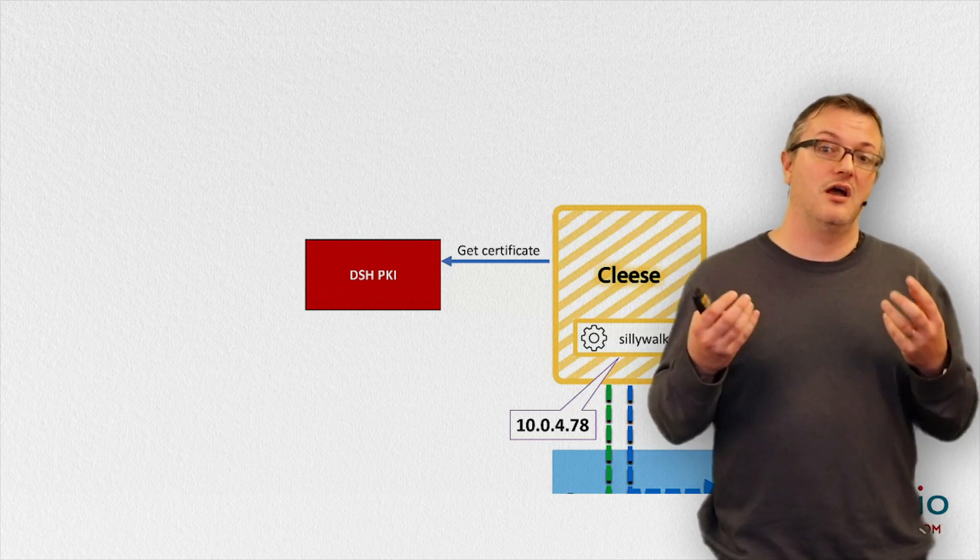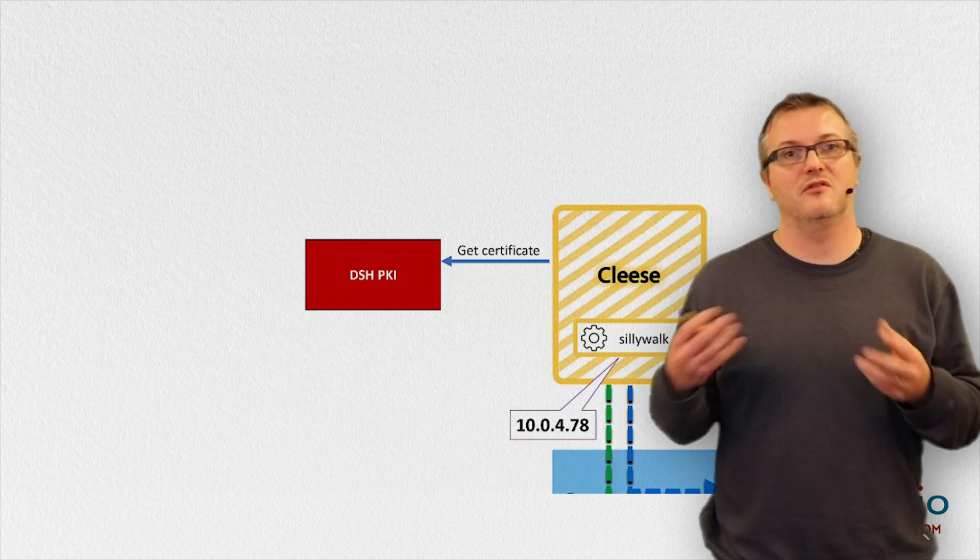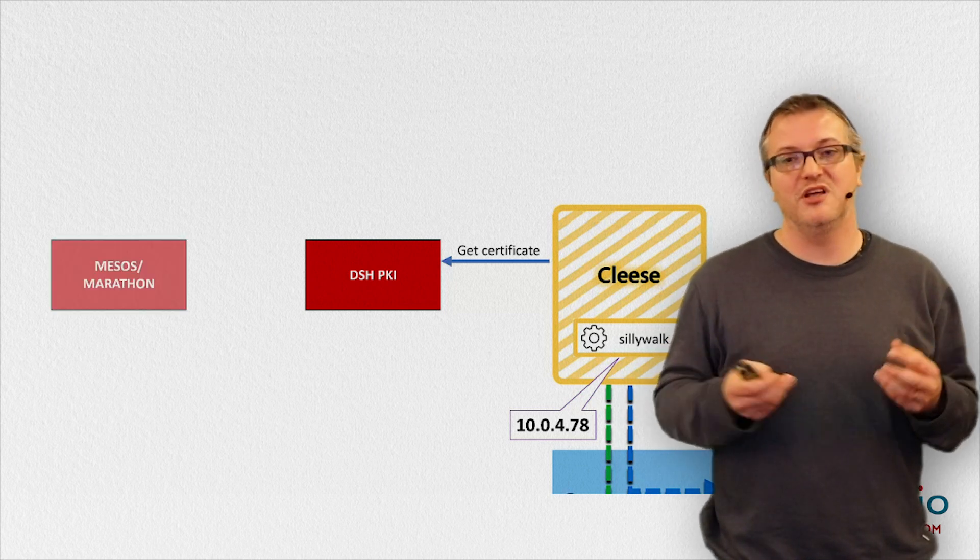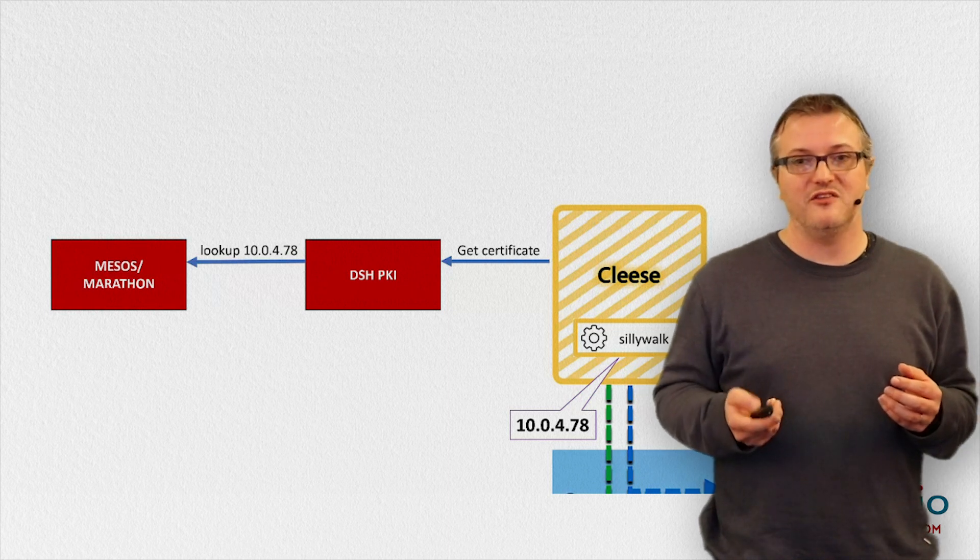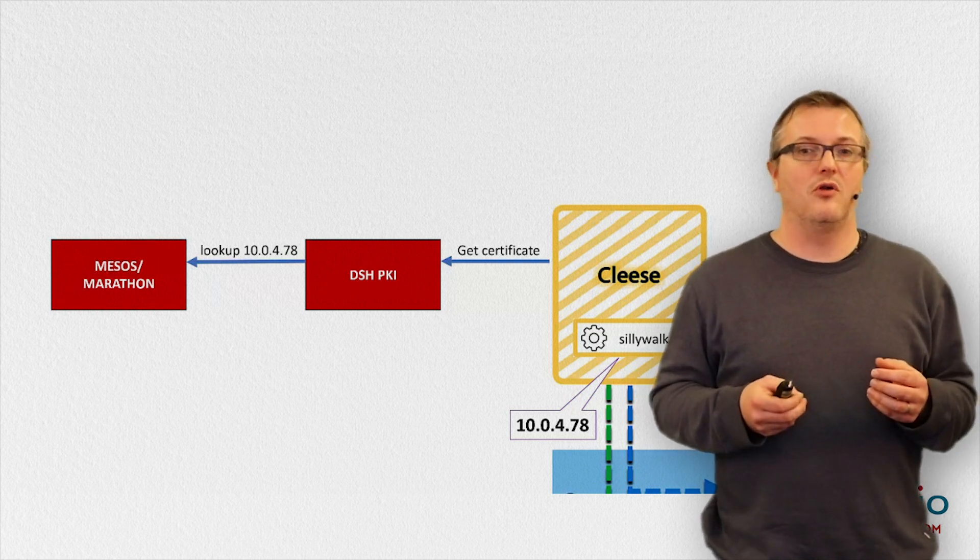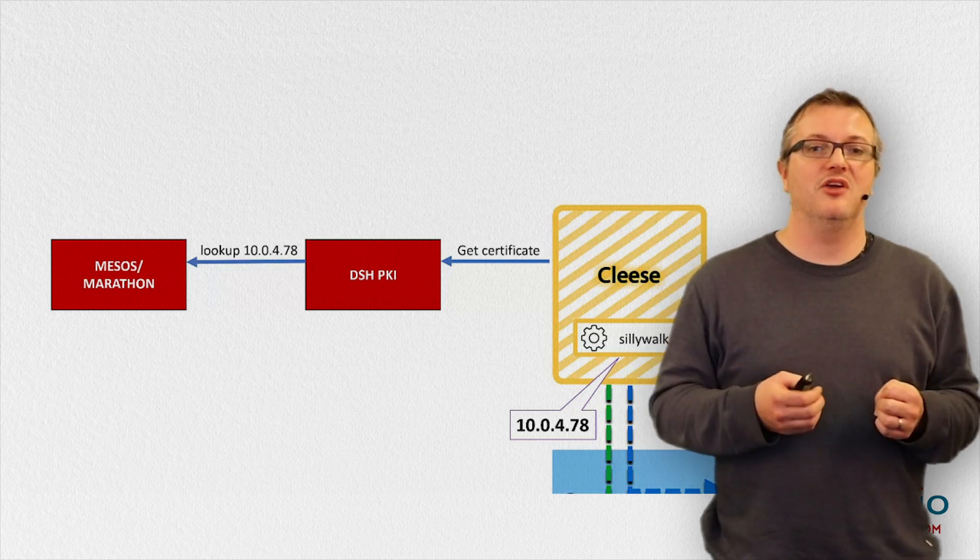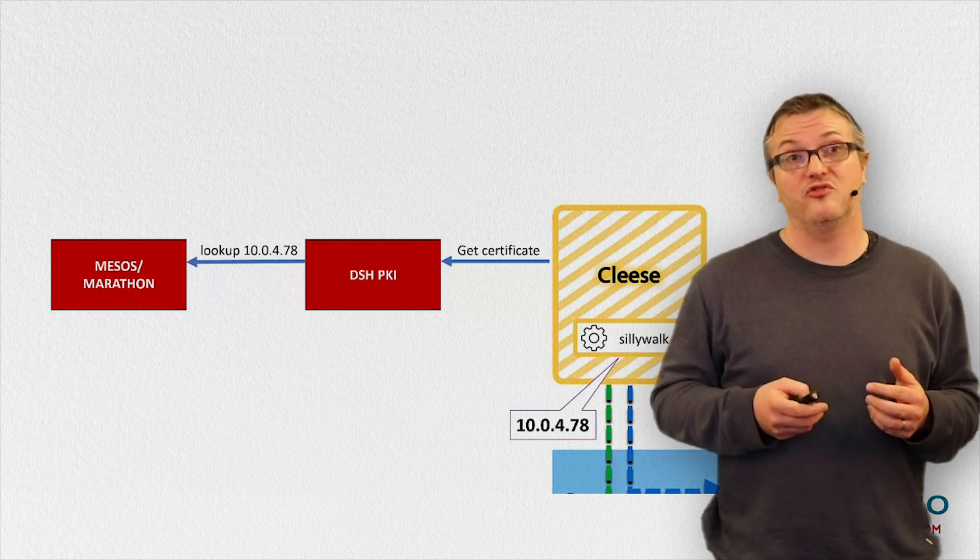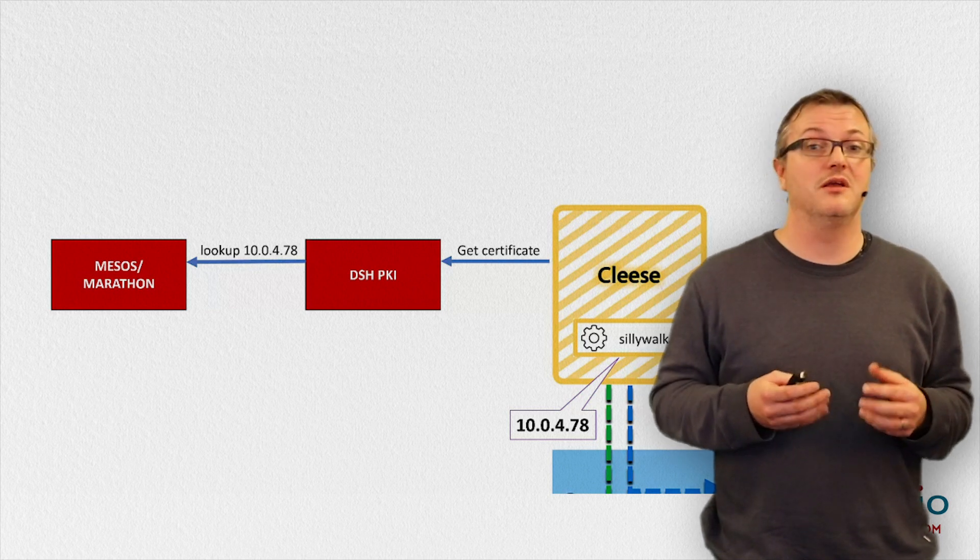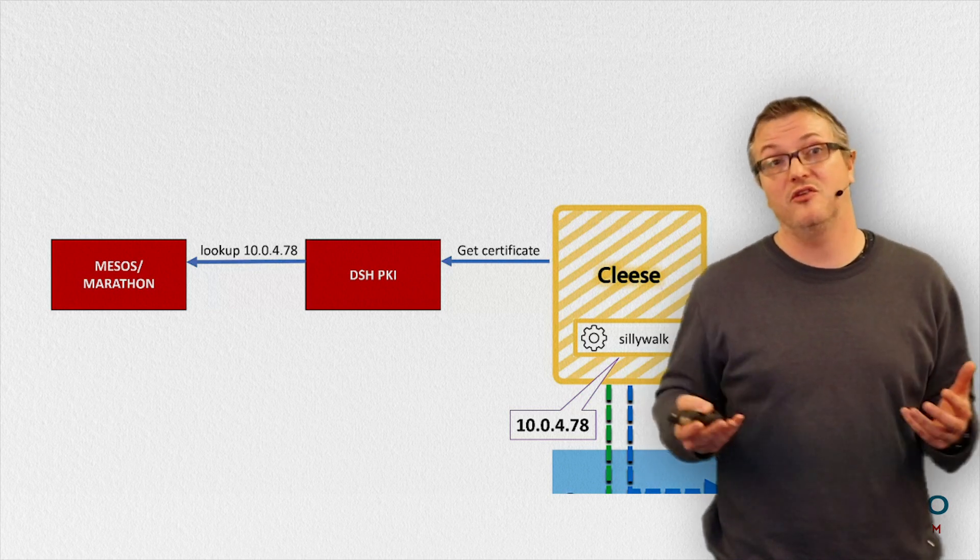Well, it has the IP address of the originating TCP connection. And it uses that to look up the originating application in our container orchestrator. The container orchestrator being Mesos and Marathon in the case of DSH.